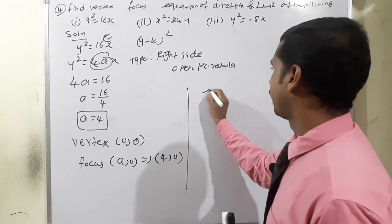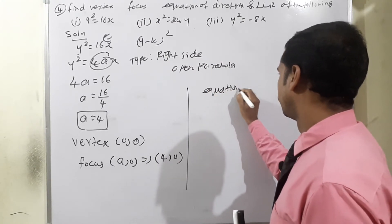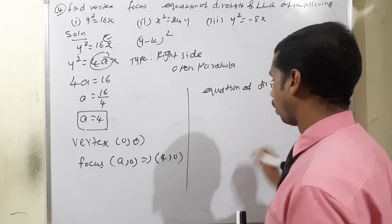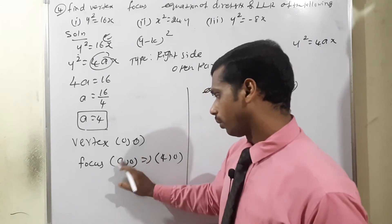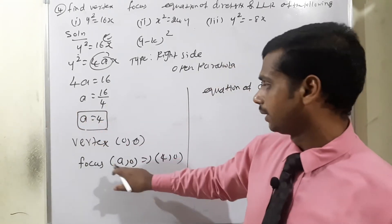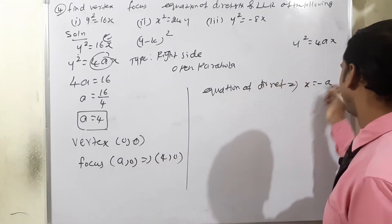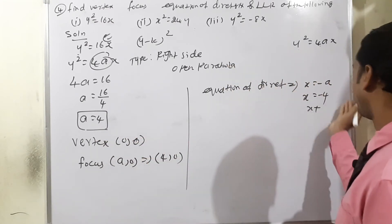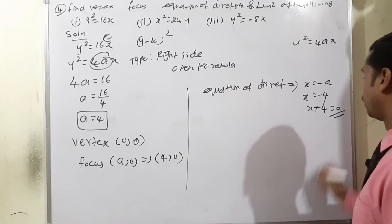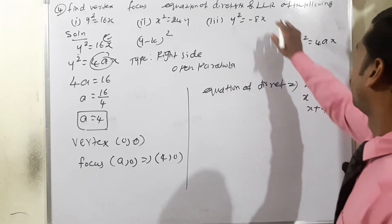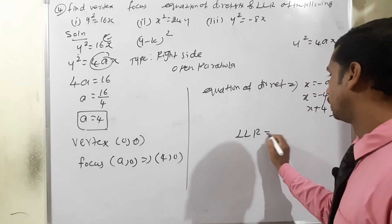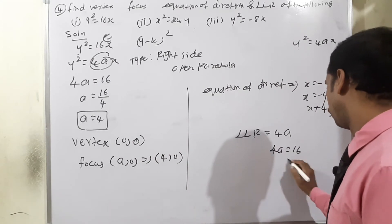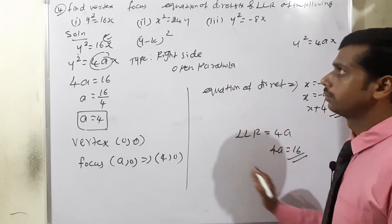Second: focus is (4, 0). Third: equation of directrix. For right side open parabola, x = -a, so x = -4, therefore equation of directrix is x + 4 = 0. Last condition: length of latus rectum = 4a = 16. This completes subdivision one.